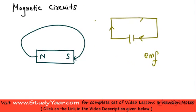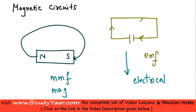So if you were to take an analogy from your electrical circuits you can say that there is an MMF which is your magnetomotive force that drives this flux around your closed path.